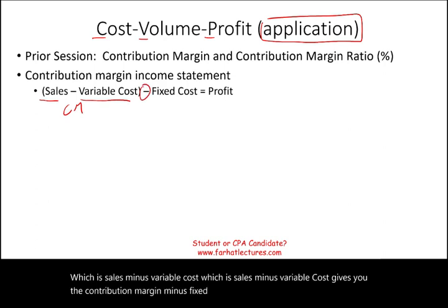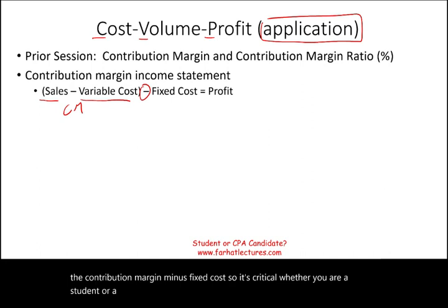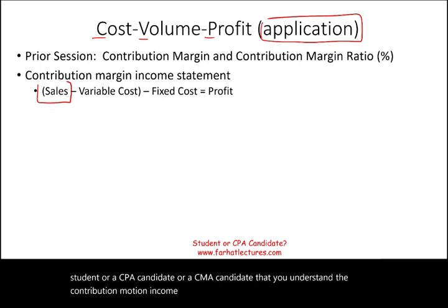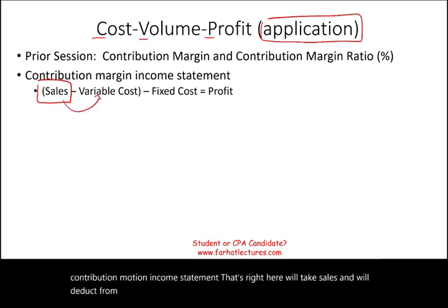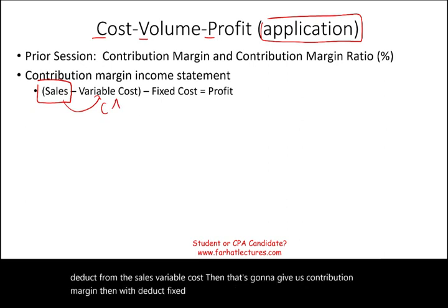It's critical whether you are a student, a CPA candidate, or a CMA candidate that you understand the contribution margin income statement. We take sales, deduct variable cost to get the contribution margin, then deduct fixed cost. Simply put, we separate costs into a fixed component and a variable component.